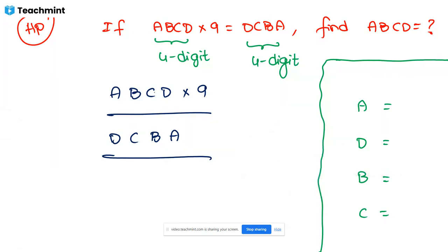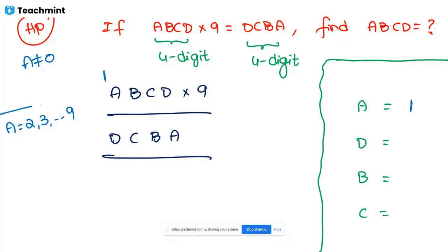How to decide A's value: A cannot be zero (leftmost). I decide A = 1. Why? If A is two or more, then nine times two equals eighteen — five digits, a carry is generated and it becomes a five-digit number. The problem requires a four-digit result, so A must be one. Nine multiplied by any value from two to nine produces a carry making it five digits.